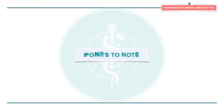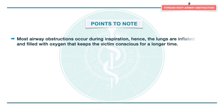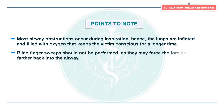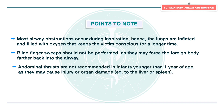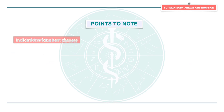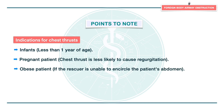Some important points to note: most airway obstructions occur during inspiration, so the lungs are inflated and filled with oxygen, keeping the victim conscious for longer. Blind finger sweeps should not be performed as they may force the foreign body further back into the airway. Abdominal thrusts are not recommended in infants under one year as they may cause injury to organs such as the liver or spleen. Indications for chest thrusts include infants under one year, pregnant patients where chest thrusts are less likely to cause regurgitation, and obese patients if the rescuer is unable to encircle the patient's abdomen.